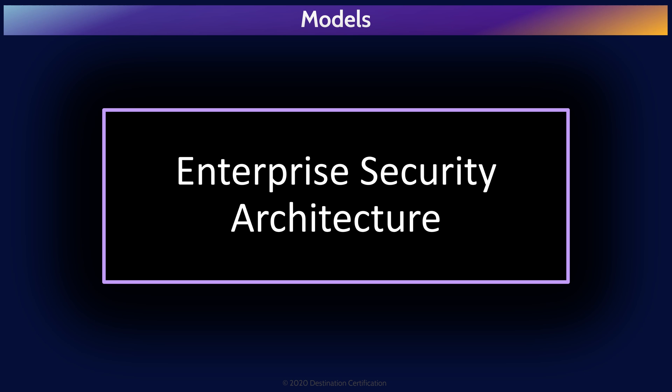Let's begin with some definitions. An architecture is simply a bunch of components that work together. A security architecture is how we protect and secure each of those components. And an enterprise security architecture is how we protect all of the components of the enterprise — the people, processes, systems, networks, etc. There are three major enterprise security architectures that you should know about.